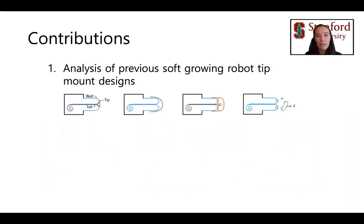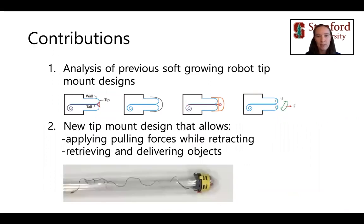The contributions of this work are: first, an analysis of previous soft-growing robot tip mount designs, and second, a new tip mount design that for the first time allows soft-growing robots to apply pulling forces on the environment while retracting and to retrieve and deliver objects.